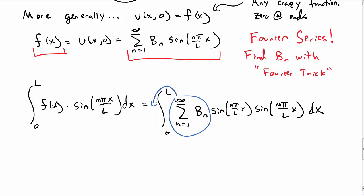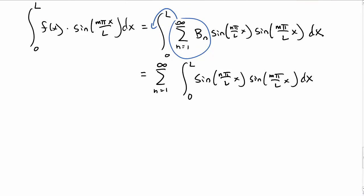And then we look at the right-hand side, and the sum over b sub n can come out of the integral. So let's pull that out of the integral. And then now our integral is just from 0 to L, these two sine terms, dx.